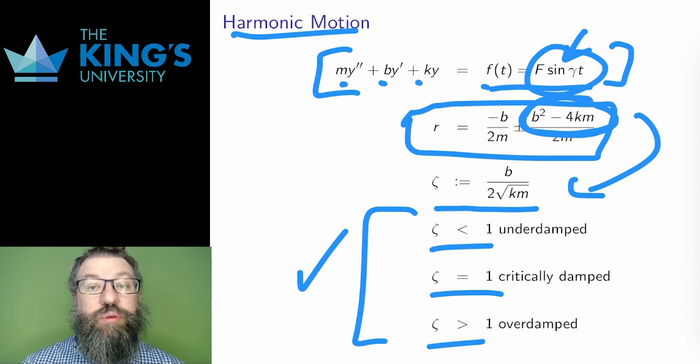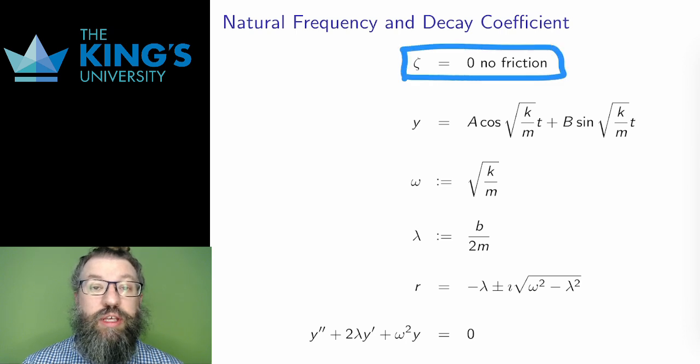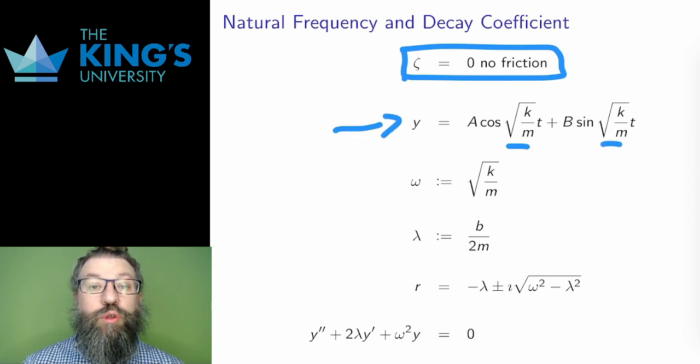And zeta is only the first of several new constants I'm going to define in this video. For the moment, consider the situation with no friction, that is, zeta equals 0.